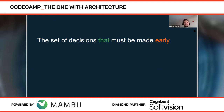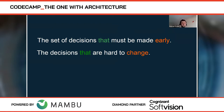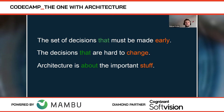One definition says that software architecture is the set of decisions that must be made early. That sounds very good in theory, but in practice it's actually the set of decisions you wish you made early, because most of the things you do not really know from the beginning and you need some time to figure them out. A second definition is that software architecture is the decisions that are hard to change — for example, the programming language you choose to build your application. Once chosen, it's really very hard to change. And probably the one I like most says architecture is about the important stuff. That sounds kind of silly, but it's actually very profound — it depends on what you think is important.